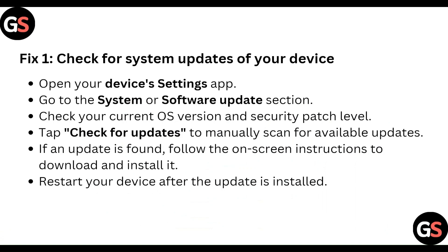First of all, check for the system update of your device. Open your device settings app. Go to the system or software update section. Check your current OS version and security patch level, and tap 'Check for Update' to manually scan for available updates. If an update is available, follow the instructions to download and install it, then restart your device after the update is installed.